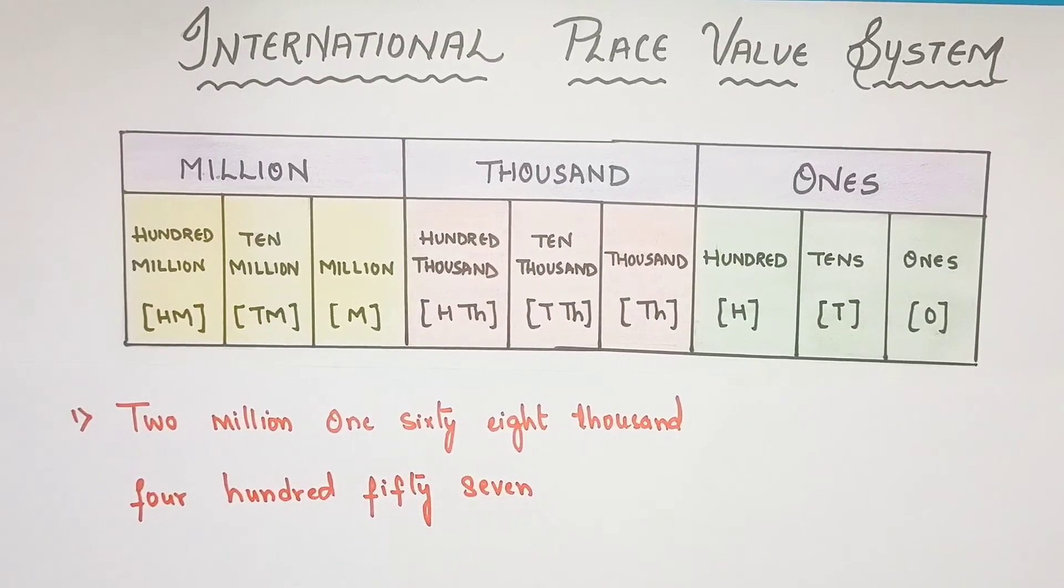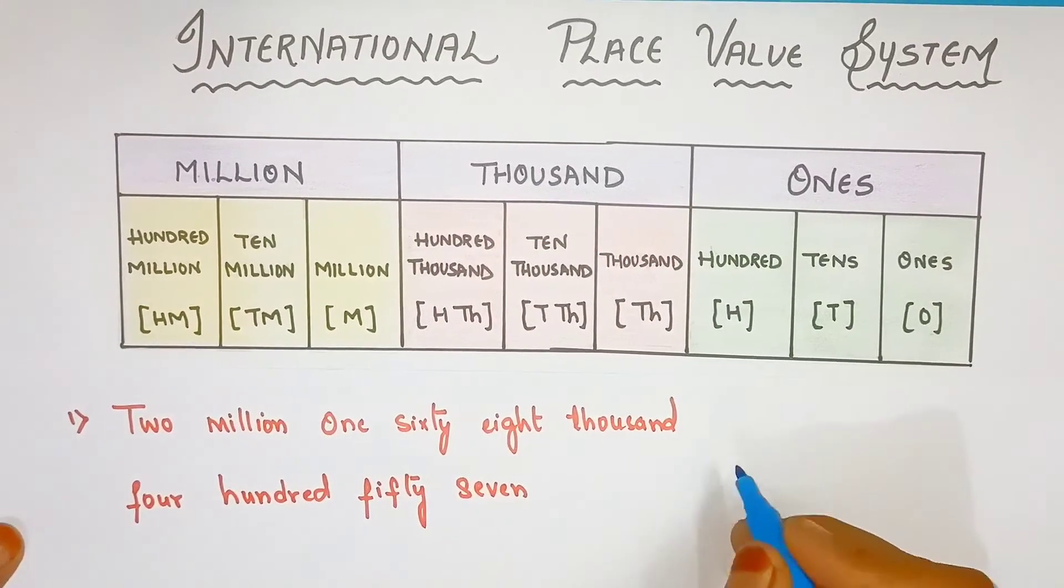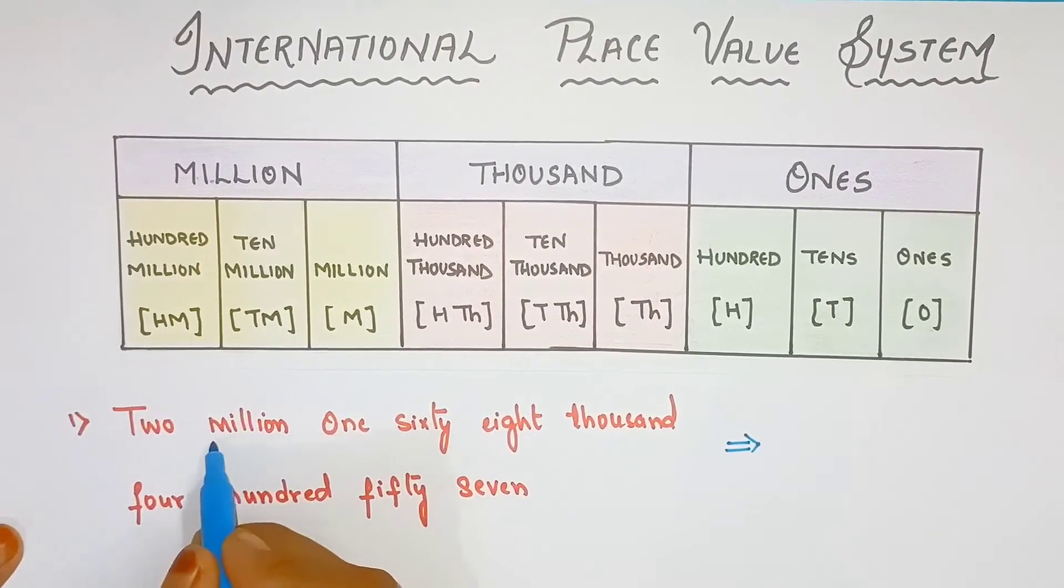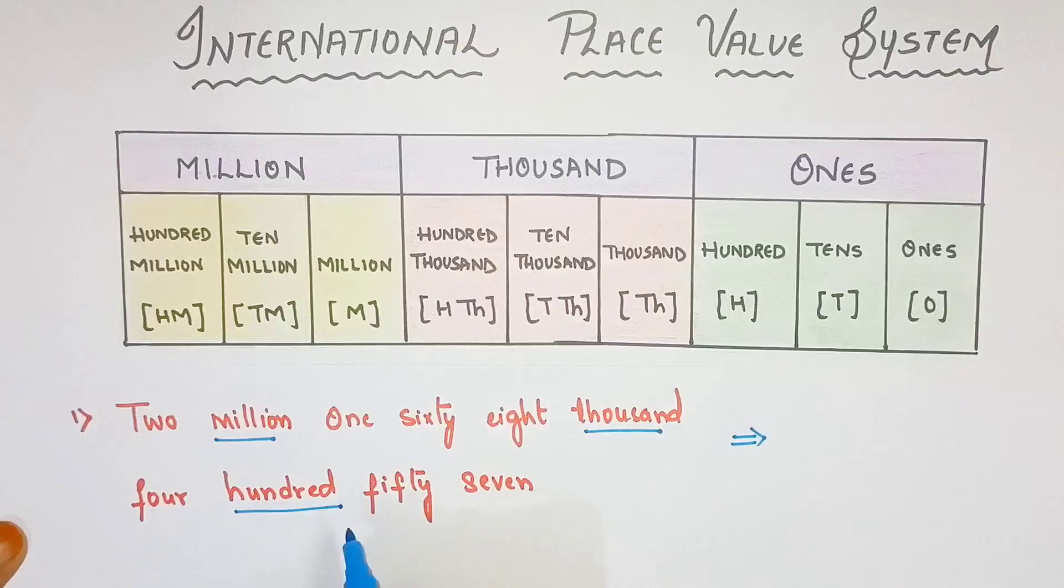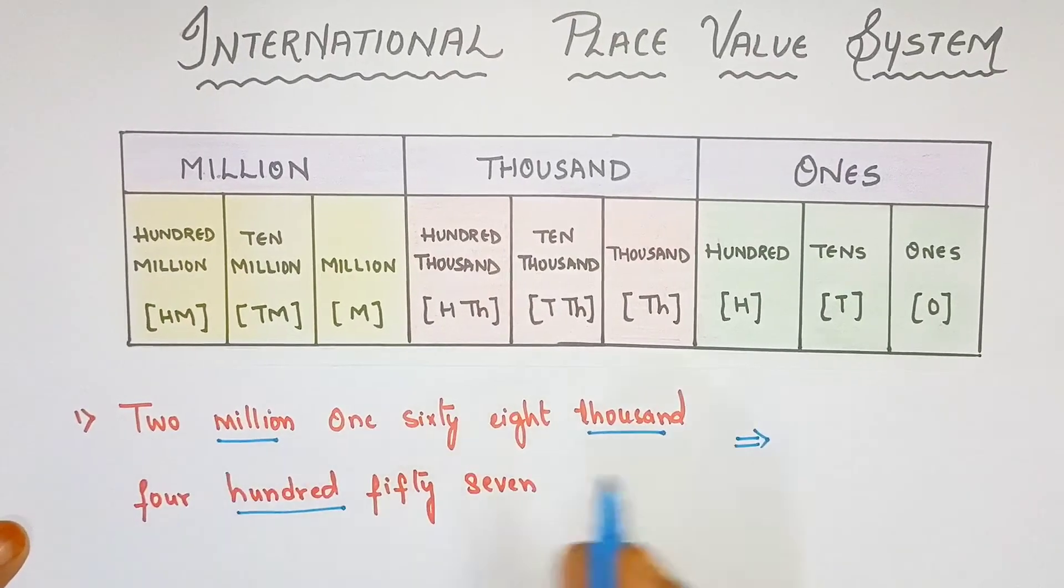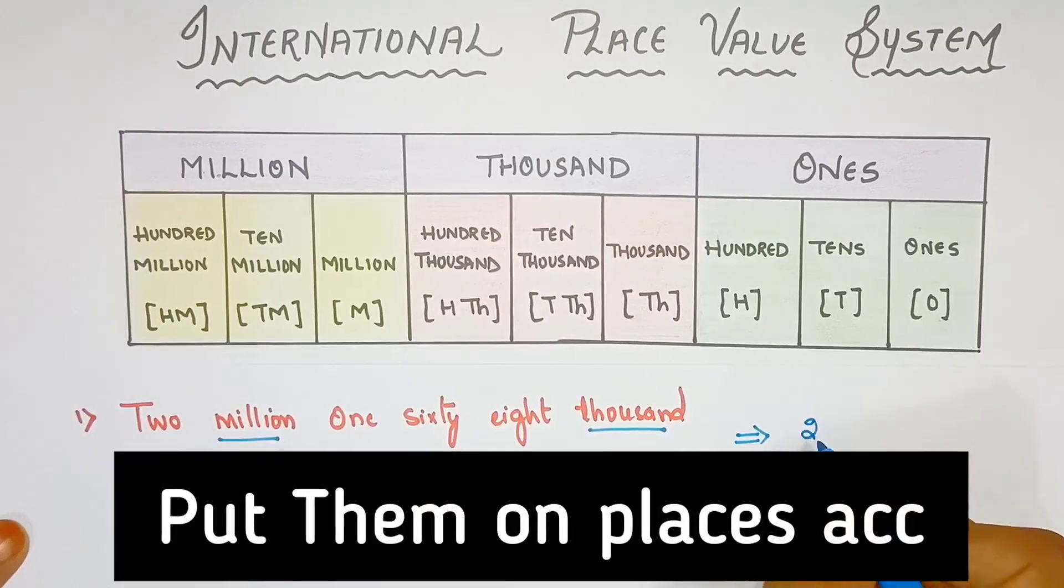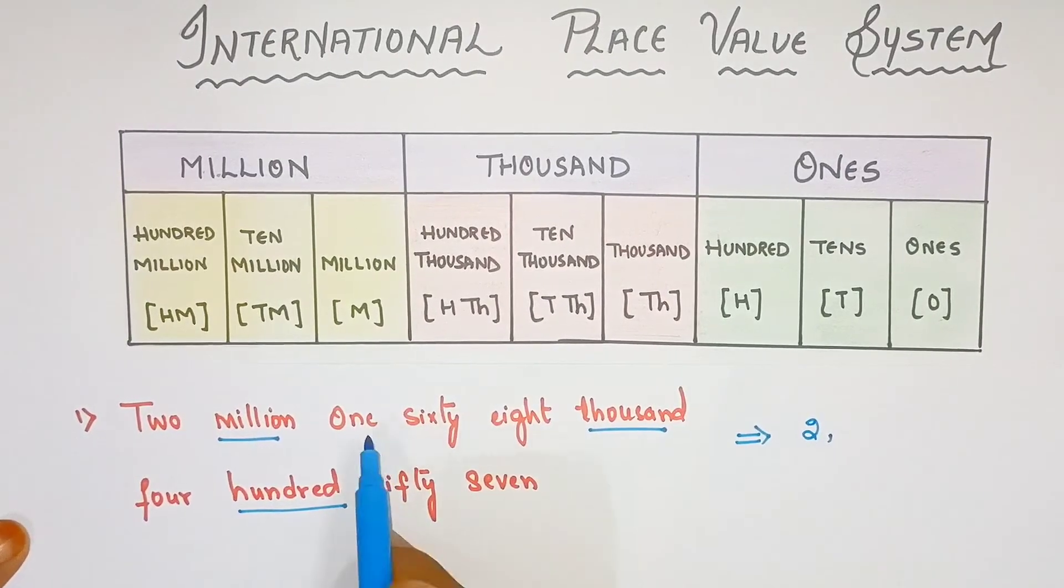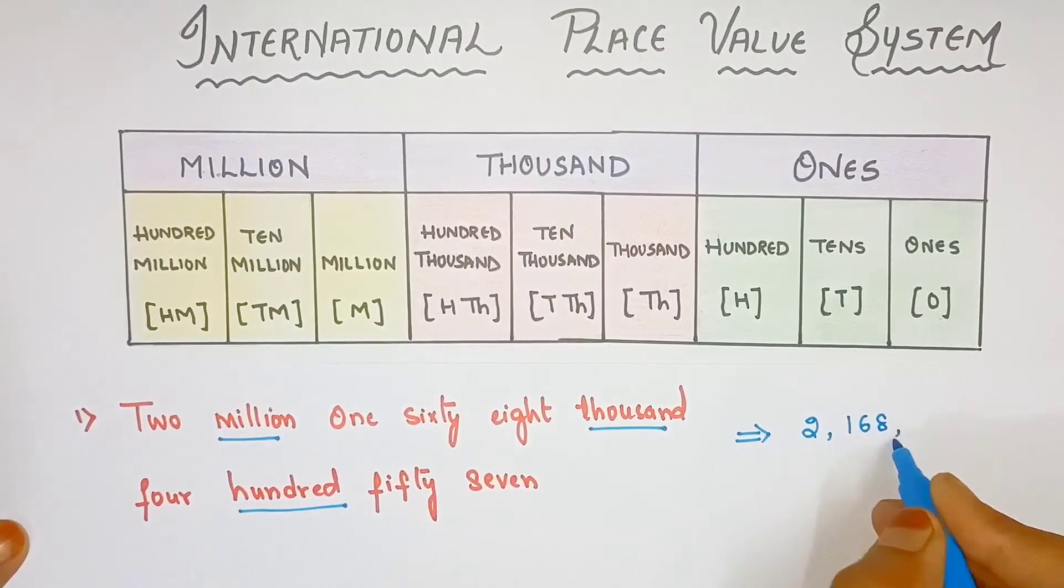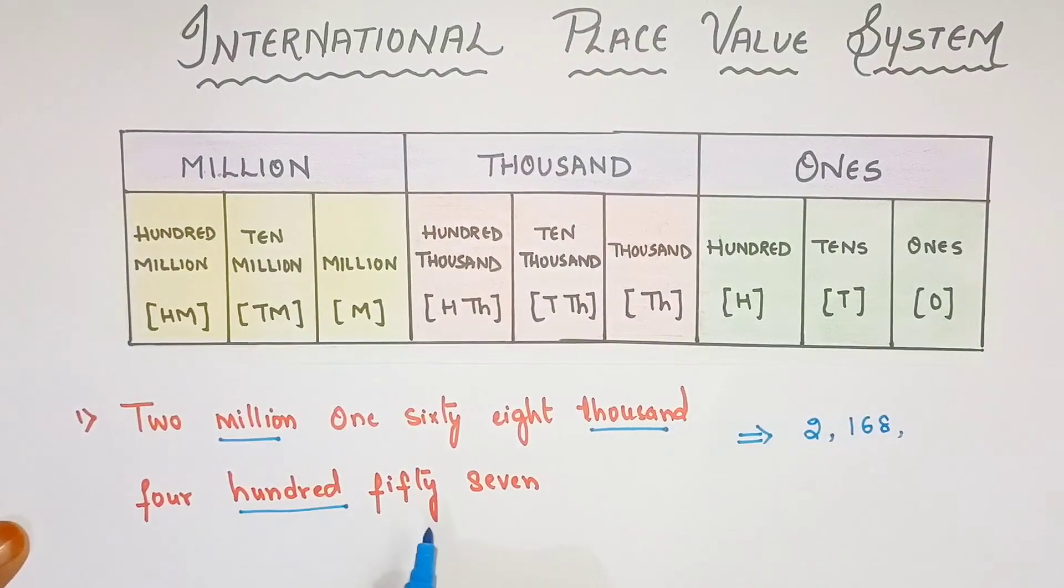Now, we will write this number in numbers form. First, here, we will mark the periods. Here, million, thousand and hundred. Now, we will write this number here: Two millions, six hundred sixty-eight thousand, four hundred fifty-seven.